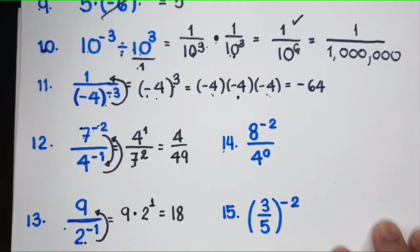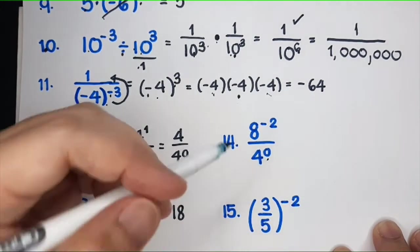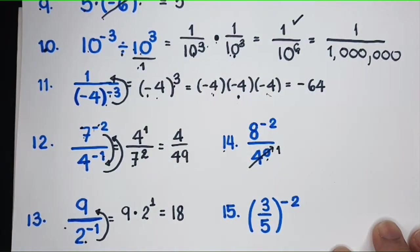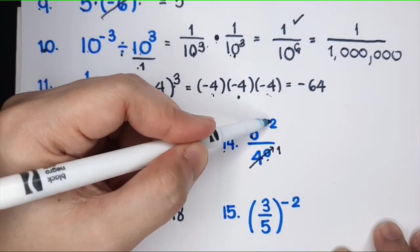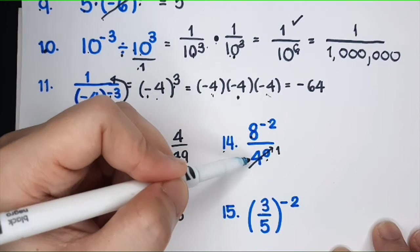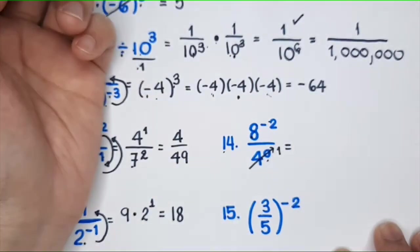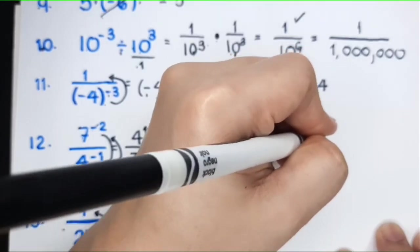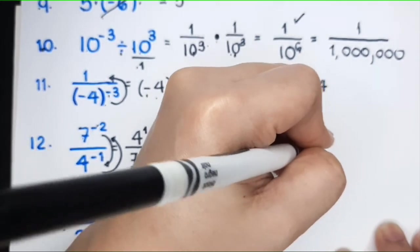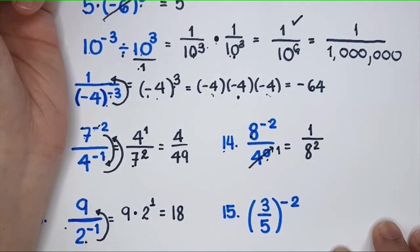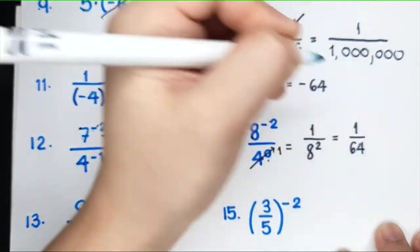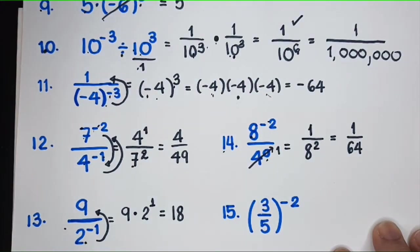For number 14, there's a zero exponent, which means that part equals 1, so you can ignore it. You only have 8 raised to negative 2. Writing without a negative exponent: 1 over 8 squared. What is 8 squared? That's 8 times 8, which equals 64. So the answer is 1 over 64.